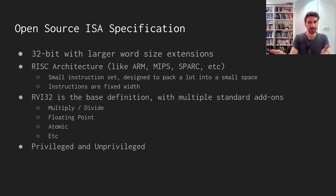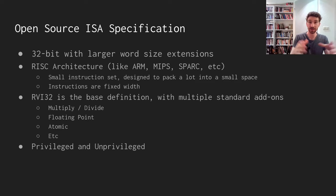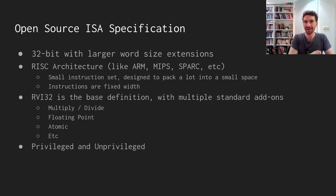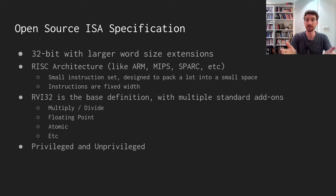That has some implications — if you've got one instruction and everything has to fit in the 32-bit word, and you want to load an address which is also in a 32-bit address space, you don't have access to the whole address space. So things like addresses are relative. But there are really smart ways around that that basically make it so that doesn't really matter.